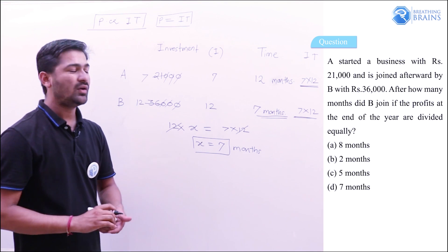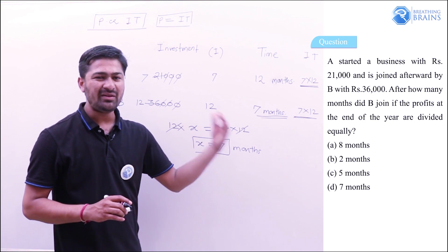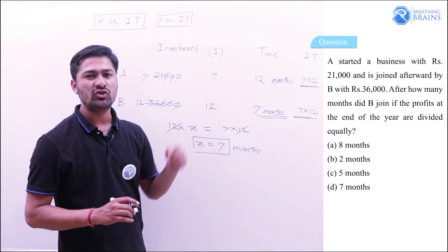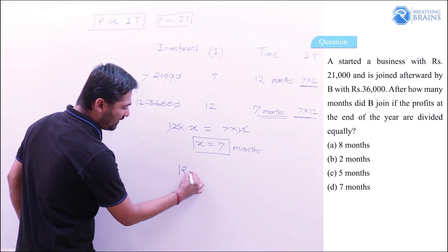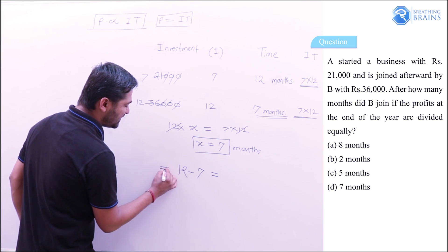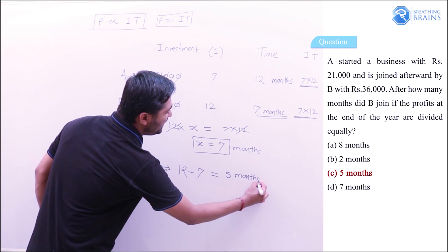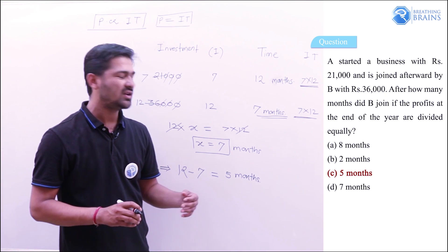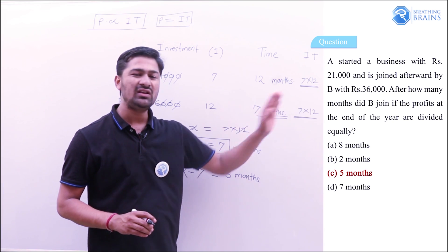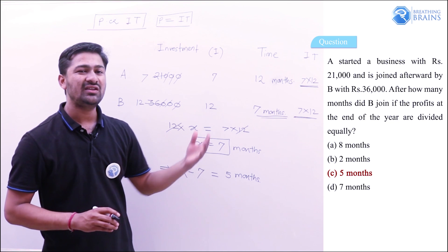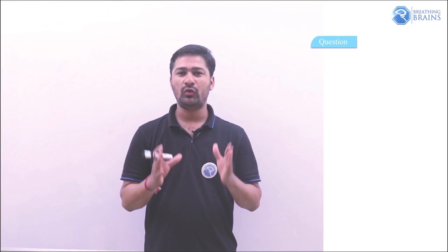B's time of investment is 7 months, but the question asks after how many months B should join. Since the total period is 12 months and B invests for 7 months, B joins after 12 − 7 = 5 months. This makes the investment-time ratio equal (7×12 = 12×7), so profits are shared equally.